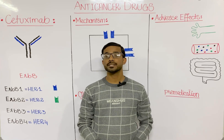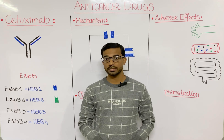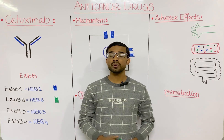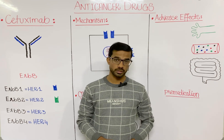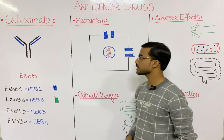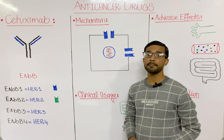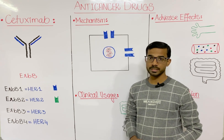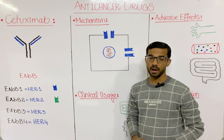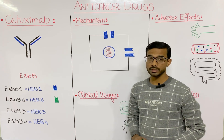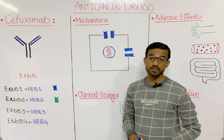Today we are going to discuss cetuximab, which is an anti-cancer drug. In this lecture we are going to discuss the different aspects of cetuximab. Cetuximab is basically a monoclonal antibody that is used in the treatment of different cancers. Before we start the mechanism of cetuximab, we will first discuss the erythroblastic oncogene B.